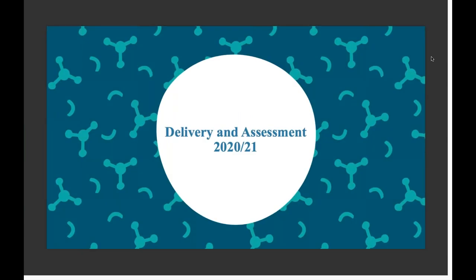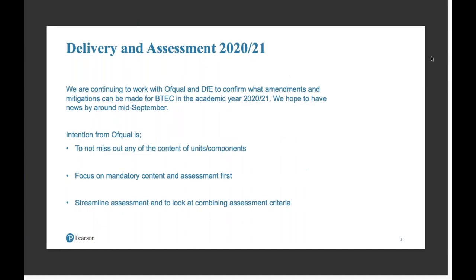Moving on to start to think about delivery and assessment for 2021. At the moment, we are still working with Ofqual and DfE to confirm amendments and mitigations that can happen for BTEC in this next academic year. It's hoped that we can have some more news around that by mid-September — that's the sort of date we're looking for to get everything confirmed and release that information.